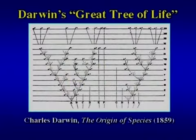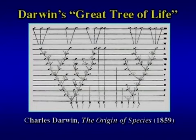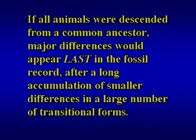Darwin's tree of life is illustrated by the only diagram in Darwin's Origin of Species. In it, Darwin shows how a single species, subjected to different environments over time, can diverge into different forms — different species, genera, families, classes, even different phyla. If all animals were descended from a common ancestor according to this pattern, then the minor differences would appear first and the major differences last.